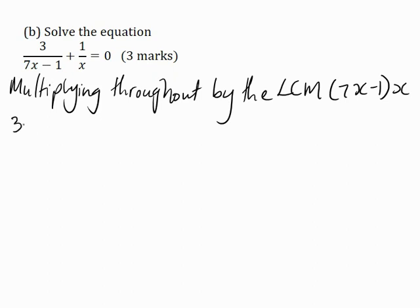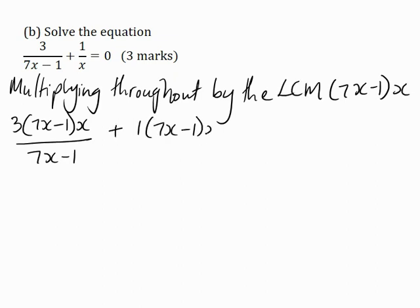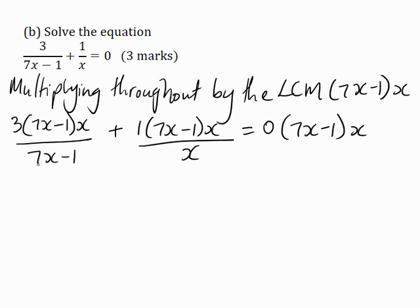So: 3 multiplied by (7x minus 1) multiplied by x, all over (7x minus 1), plus 1 multiplied by (7x minus 1) multiplied by x, all over x, equals 0 multiplied by (7x minus 1) multiplied by x. Notice that this denominator cancels with this numerator, and this denominator cancels with this numerator. And 0 multiplied by anything is 0. So this becomes 3x plus 1 multiplied by (7x minus 1) equals 0.